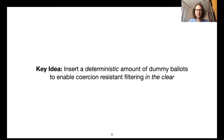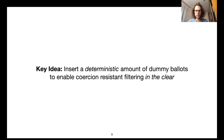The key idea in VoteAgain is that we can avoid this leakage due to group sizes by, at the beginning of the filtering phase, inserting a deterministic amount of dummy ballots so that at the end of the filtering phase, any possible grouping of ballots among voters is explained by the groupings observed by the coercer. This enables us to retain the good property of filtering in the clear without breaking coercion resistance.